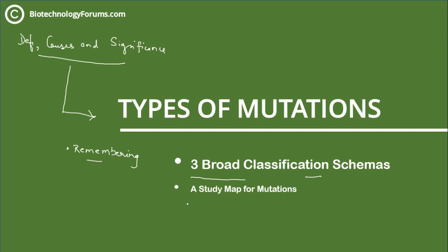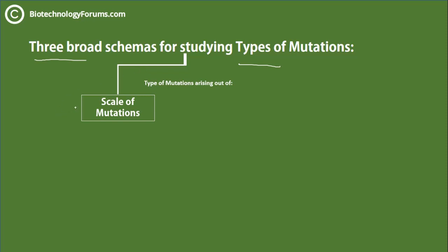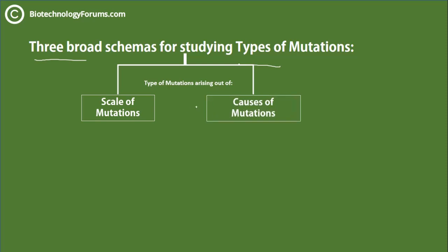So let's start. What are those three broad classification schemas? The first is the scale of mutations — at what level is the mutation taking place. The second is the causes of mutations — what are the actual causes. And the third classification scheme is the types of cells impacted by the mutations.